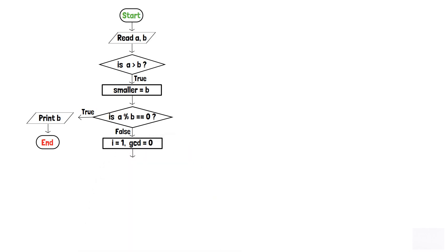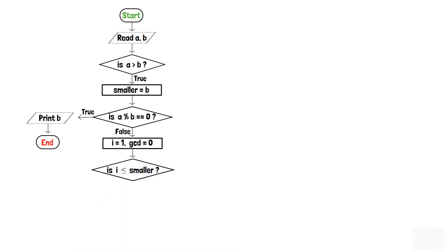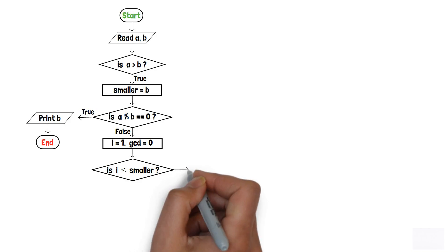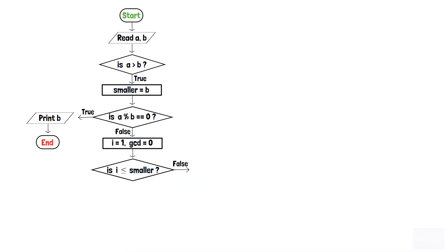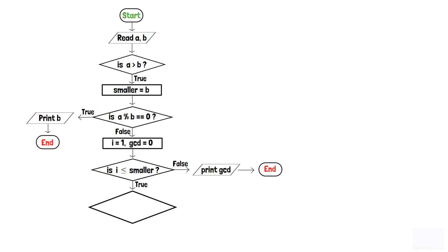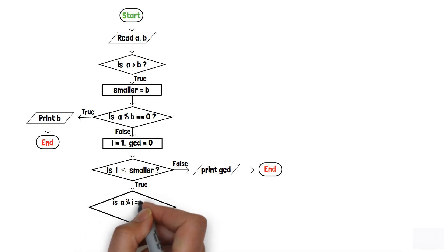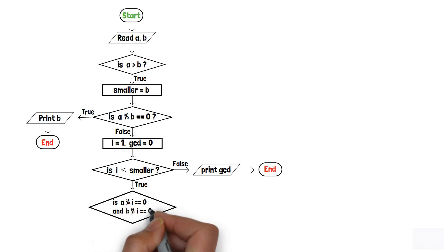Furthermore, we add a decision box that checks whether i is less than or equal to smaller. If the condition is false, meaning i is greater than smaller, we print the variable gcd through an output component and end the program. But if i is less than or equal to smaller, another decision box checks whether a modulo i equals 0 and b modulo i equals 0.